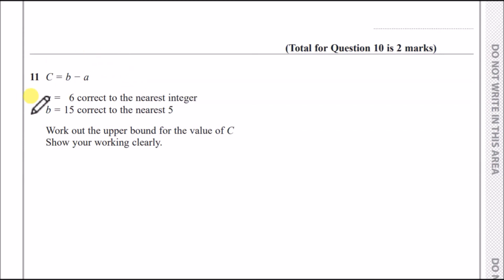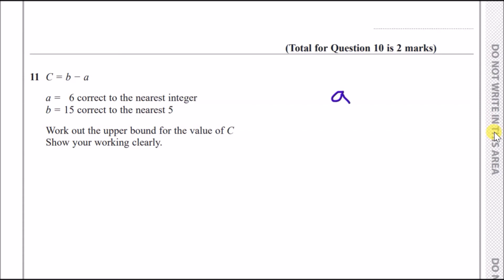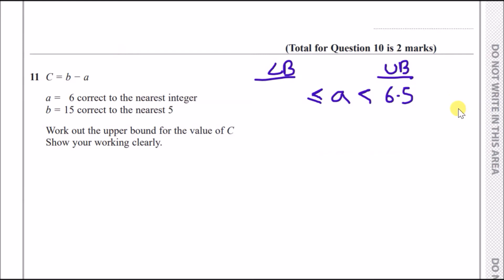Question 11: c = b − a, where a = 6 correct to the nearest integer and b = 15 correct to the nearest five. For a: the lower bound is 5.5 and upper bound is 6.5 — you add and subtract 0.5, half of one. For b, half of five is 2.5, so the bounds are 15 ± 2.5: lower bound 12.5, upper bound 17.5.